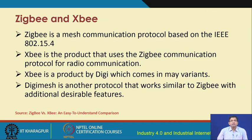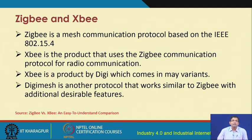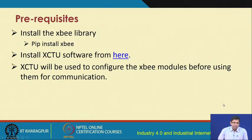Zigbee and XBee, although these terms are used interchangeably, are different. Zigbee protocol is a mesh communication protocol based on IEEE 802.15.4 standard specifications, whereas XBee is a product from the company Digi and comes in different commercial variants. DigiMesh is a protocol similar to Zigbee but with certain additional features, and it is supported by XBee modules.